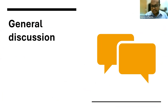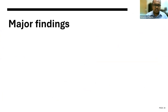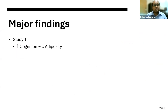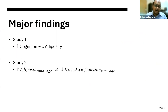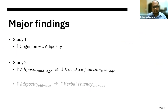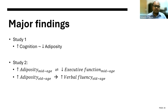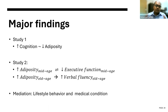Now let's move on to the general discussion. In Study One, we observed that better cognitive function is associated with lower adiposity by most measures. For Study Two, we observed that in middle-aged adults, adiposity is bidirectionally associated with executive function as measured by the Stroop task. In older adults, only the brain-as-outcome perspective emerged as significant, such that higher adiposity was associated with better verbal fluency in older adults. For the mediation analysis, we observed significant mediation effects for both lifestyle variables and medical condition variables.